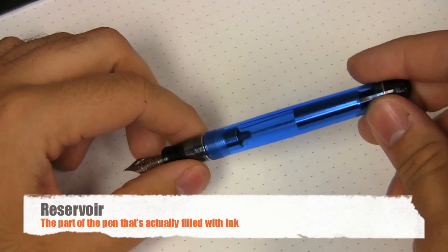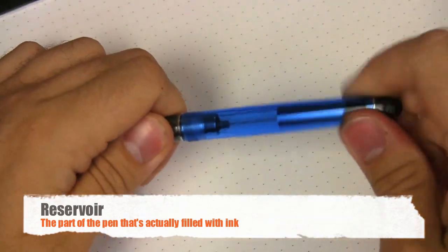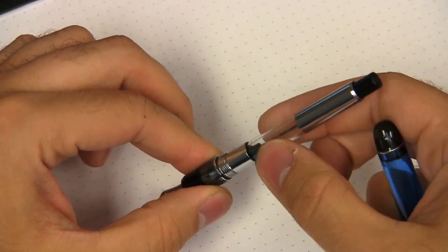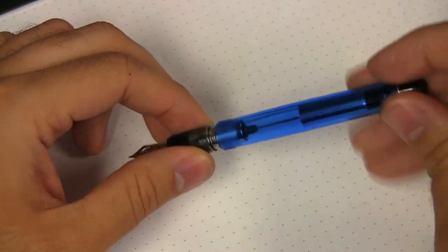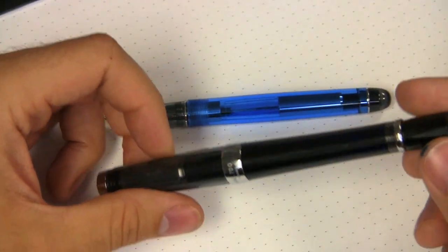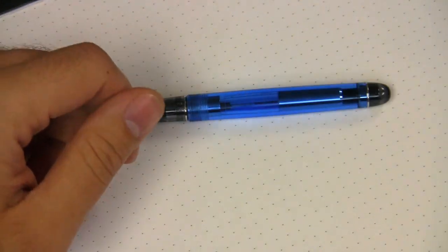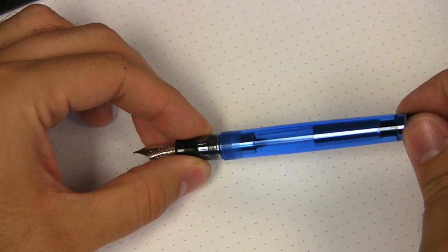The reservoir is the part of the pen that actually houses the ink. It's usually stored inside the body. Sometimes it has a cartridge or converter on the inside. Other times you can actually have the ink stored directly inside the body of the pen and there is no cartridge or converter inside. There are lots of different filling mechanisms used in different pens, but the reservoir is always what's going to be holding the ink.